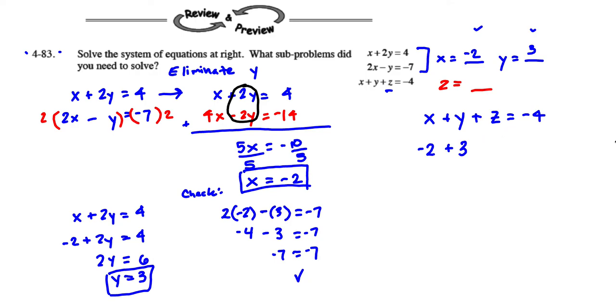And then we have plus z. And that should equal negative 4 at this point. Negative 2 plus 3 is going to be 1. We have 1 plus z equals negative 4, minus 1 from each side. And then we find that z is going to equal negative 5. So we get z equals negative 5.